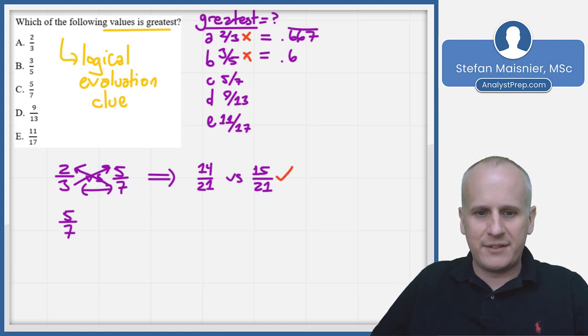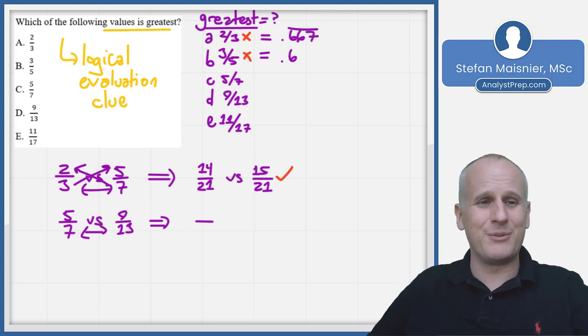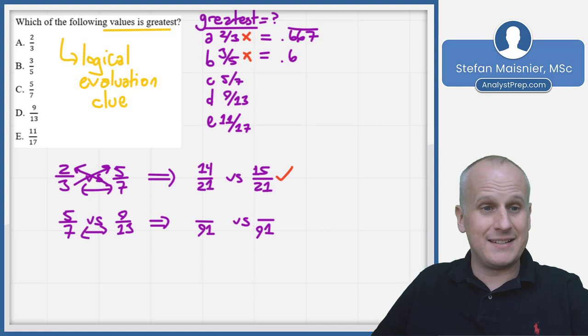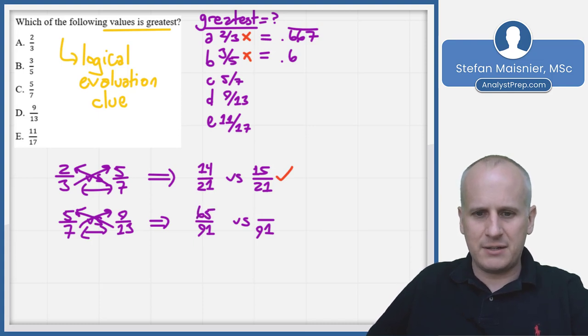Five-sevenths versus nine-thirteenths. Common denominator: 13 times 7 is 91. Multiply up and over: 13 times 5 is 65, and 9 times 7 is 63. Very close, but five-sevenths remains the winner. Eliminate choice D. Then five-sevenths versus 11 seventeenths. Common denominator is 119. 17 times 5 is 85, and 7 times 11 is 77. Five-sevenths is still our champion.